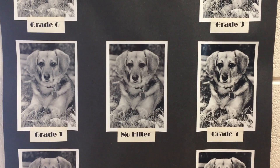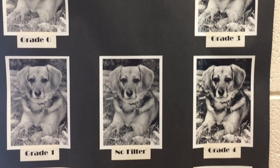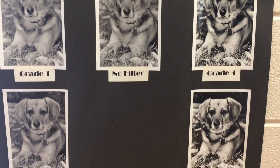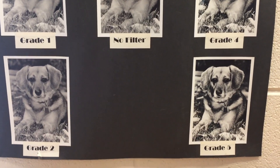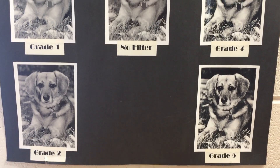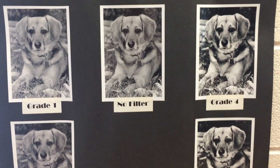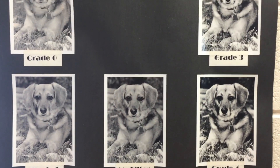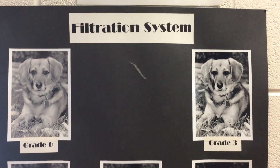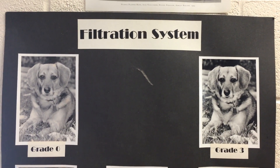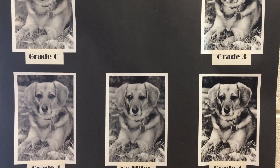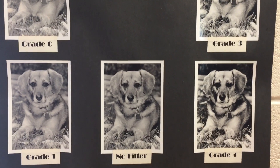You can buy photo paper in different grades, like a grade 4 or a grade 3 paper. We use what's called variable contrast paper, which means we can use filters to either increase or decrease the amount of contrast based on the picture itself. Some pictures may need more added than others, so that's the beauty of using variable contrast paper.